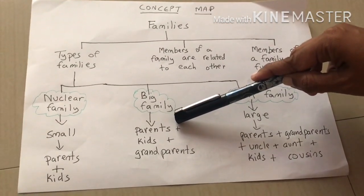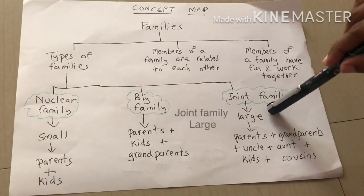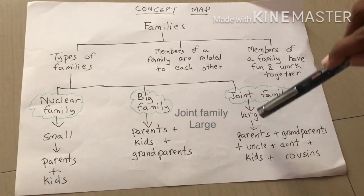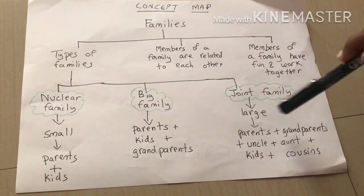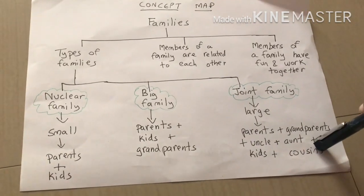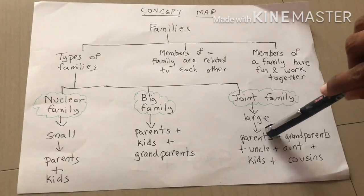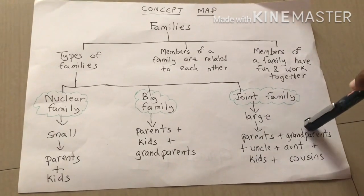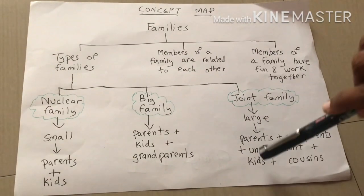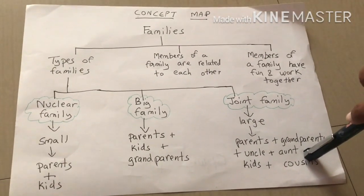They live together in the same house. Joint family is a large family in which parents, grandparents, uncle, aunt, kids, and cousins live together in the same house. Father, mother, grandfather, grandmother, uncle, aunt, kids, and cousins — all live together in the same house.